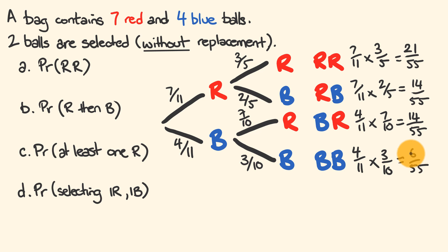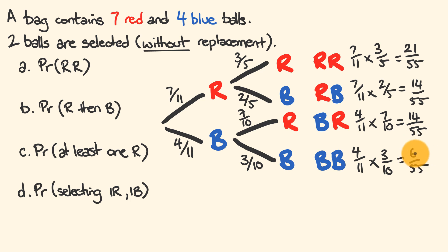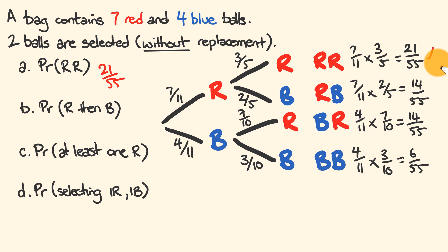It's worth checking: 21 + 14 + 14 + 6 = 55, all over 55 — so everything accounts correctly. The probability of red then red is 21/55. The probability of red then blue is 14/55.